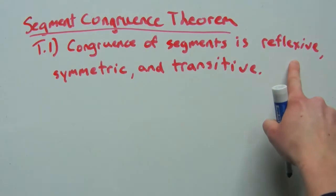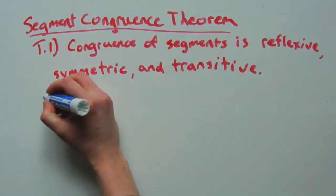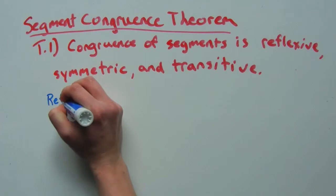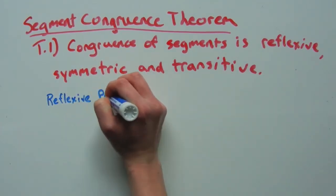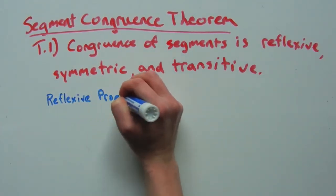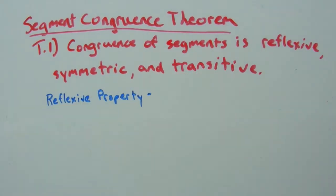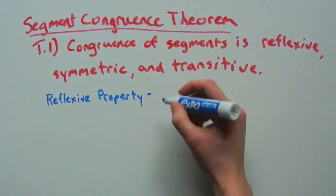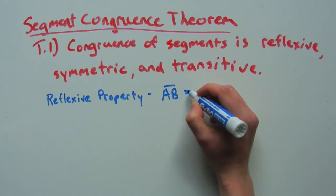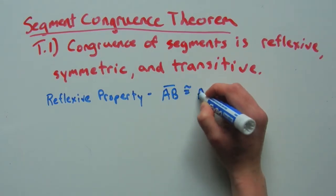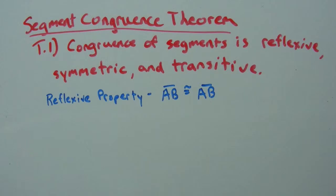Reflexive is the reflexive property. We have the reflexive property, which is different from the reflexive property of equality, in that we have that segment AB is congruent to segment AB.